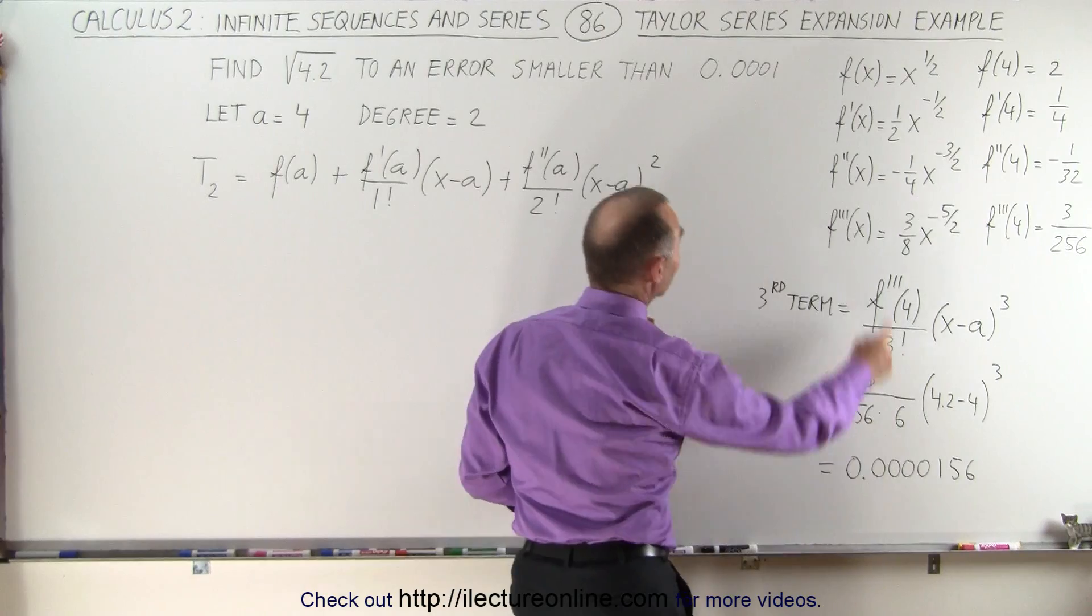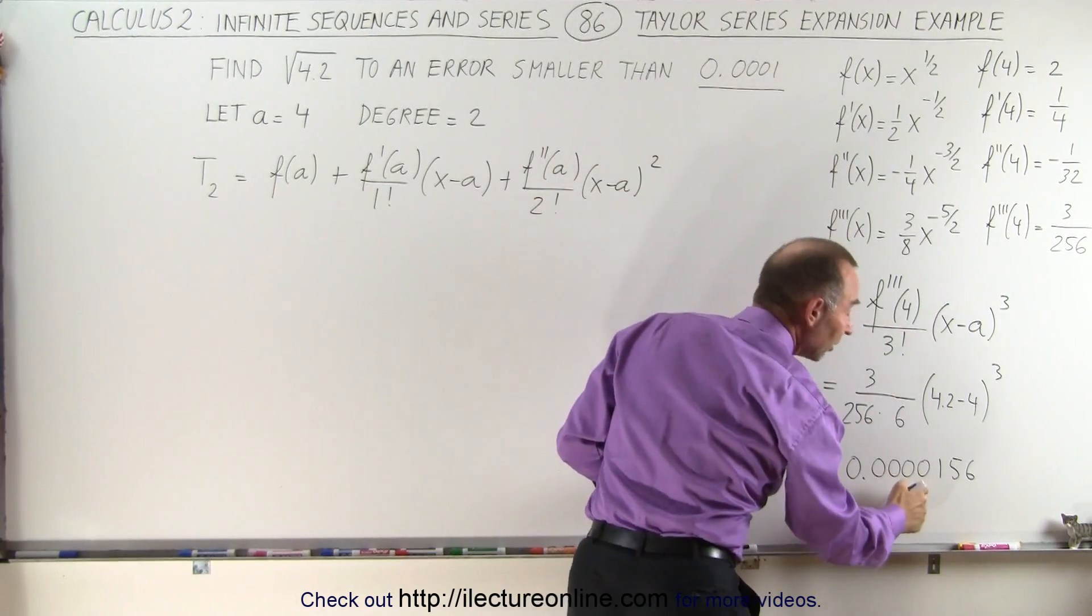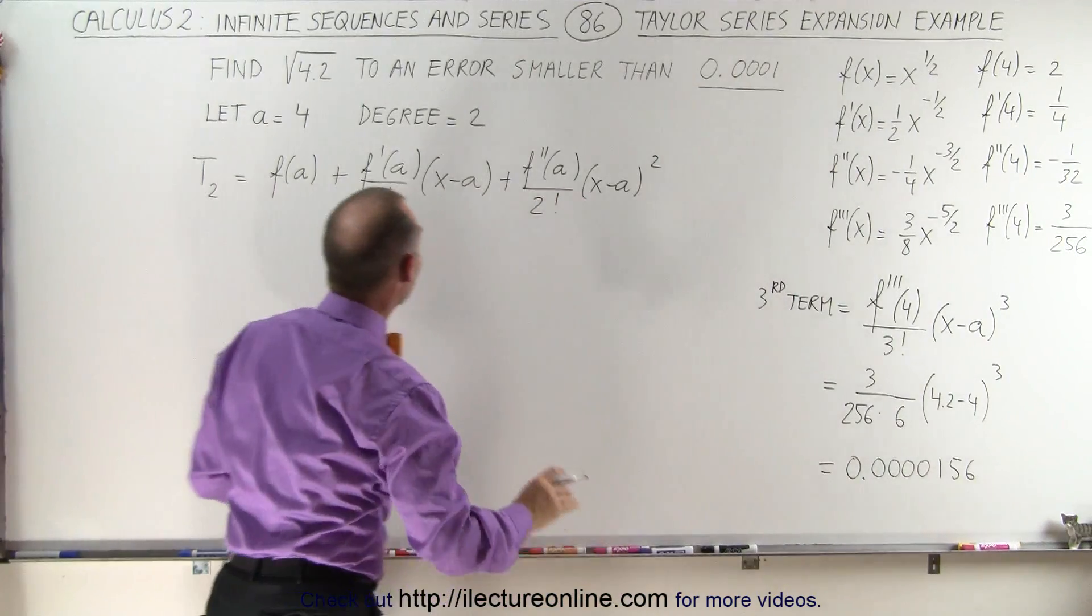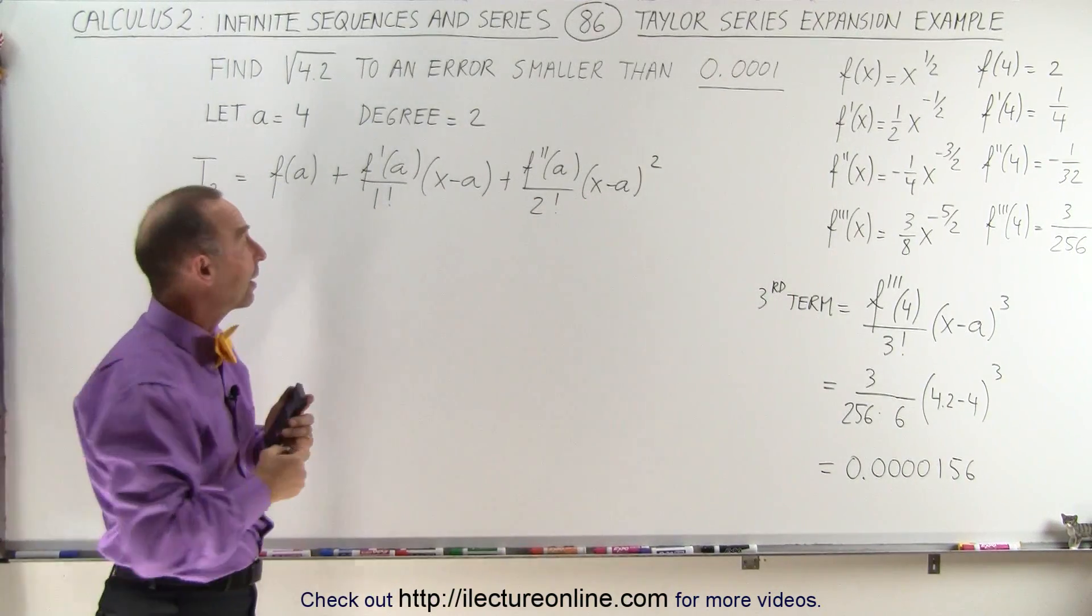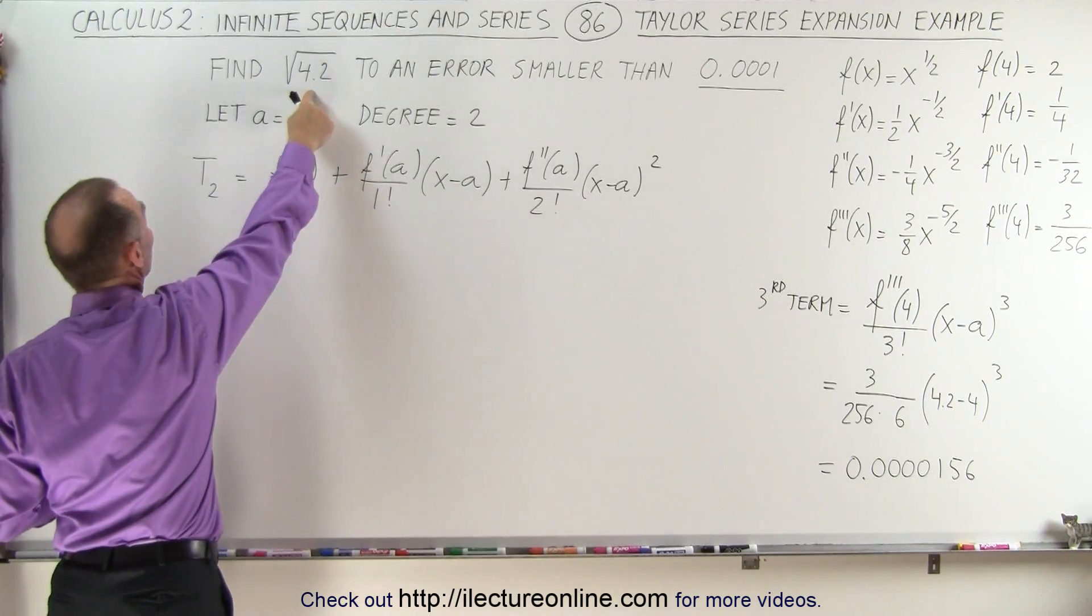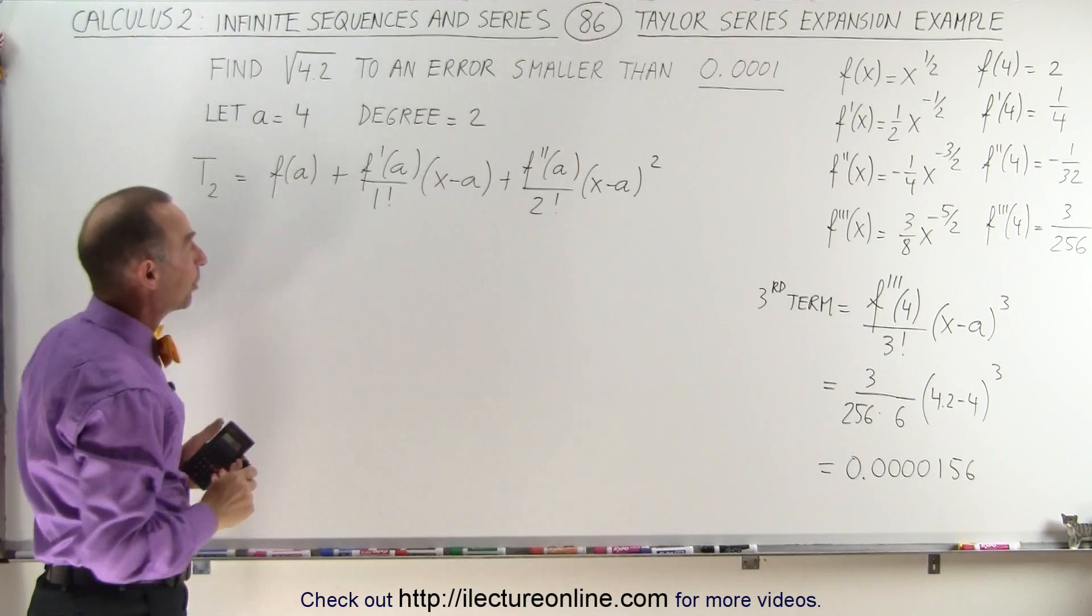Let's compare it to what we have over here. Notice that's the maximum error we're allowed. This is smaller than that, so we're good. We can go ahead and only use this expansion of the Taylor series, and it will give us a value for the square root of 4.2 to within less than 1 in 10,000. That's pretty good.